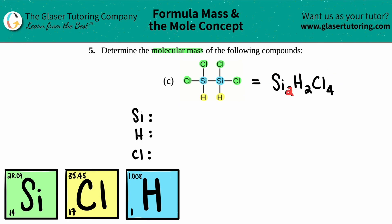So we said that we have two silicon, so I have two silicon. We said that we had two hydrogen, so two hydrogen. And then we said we had four chlorine, so four. Now we're just going to take those values and multiply by the masses that you see on your periodic table. So get your periodic tables out, guys.